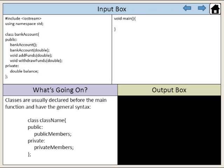Classes are usually declared before the main function and have the general syntax beginning with the keyword class, followed by the class name. Inside the brackets of a class you will find the access specifiers along with their data members. After the closing bracket is a semicolon.